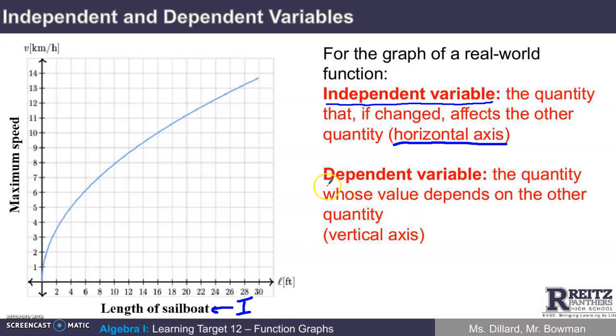By contrast, the dependent variable is the quantity whose value depends on the other quantity. It's the one we graph on the vertical axis. In this example, our dependent variable is the maximum speed. We say that the maximum speed is the dependent variable because it depends upon the length of the sailboat.